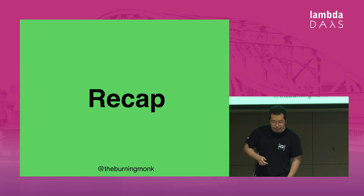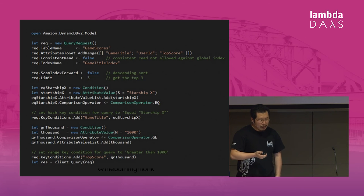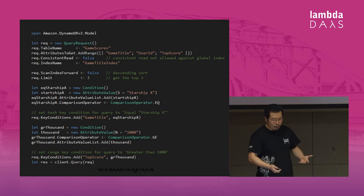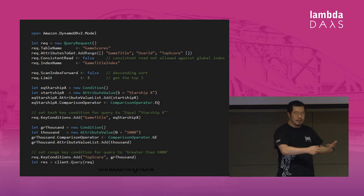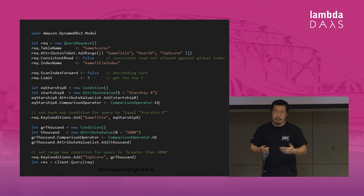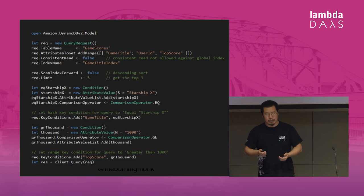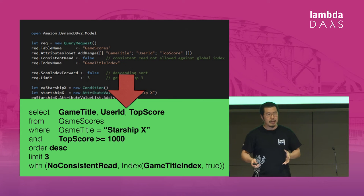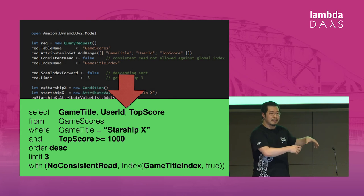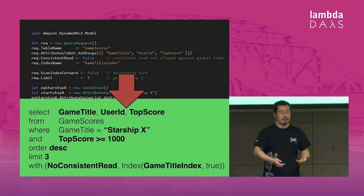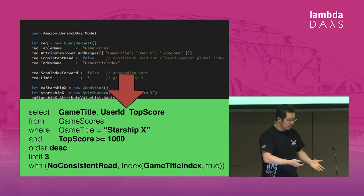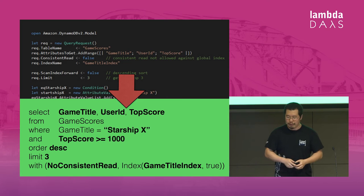To recap, we looked at how DynamoDB's query and scan operations can be quite complicated as an example of an API that suffers from under-abstraction — at least with the .NET libraries provided — and how you can use a simple DSL to hide those complexities and express your queries in a language that's much more expressive of your intent.